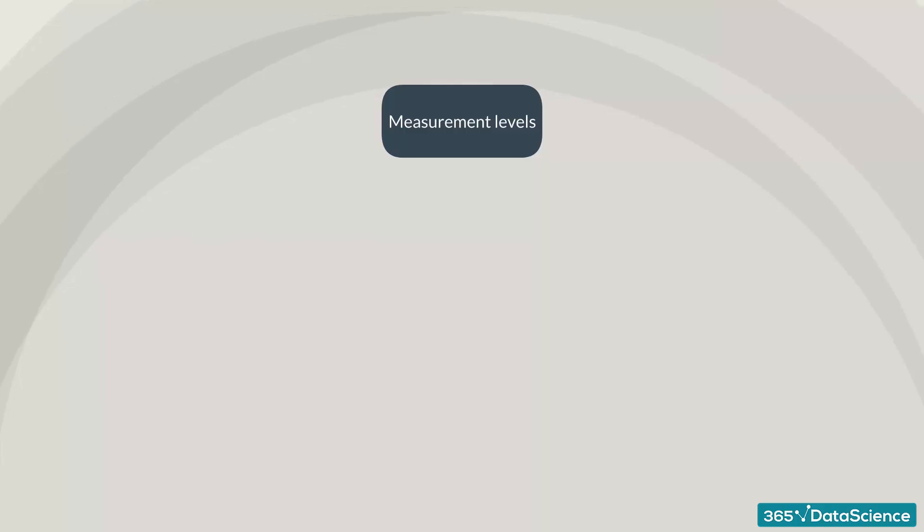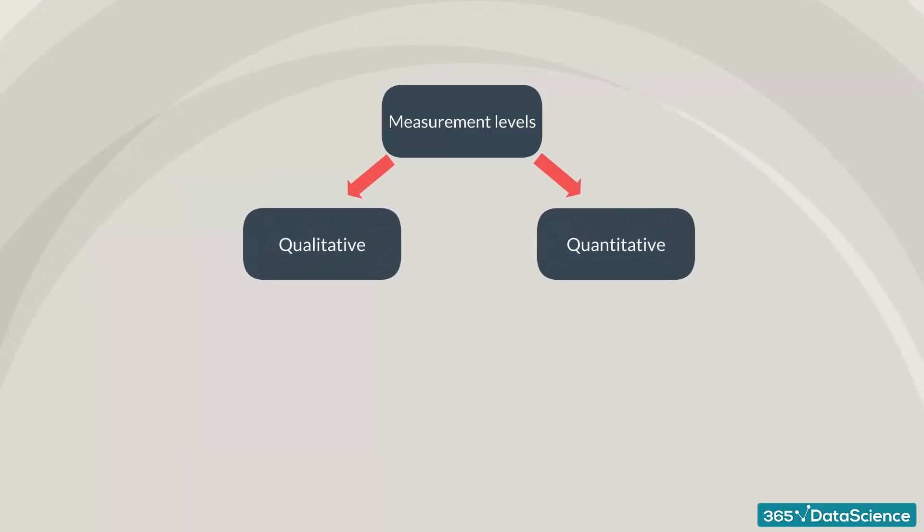Levels of measurement. These can be split into two groups: qualitative and quantitative data. They are very intuitive, so don't worry.